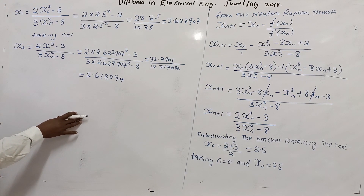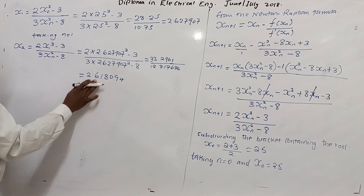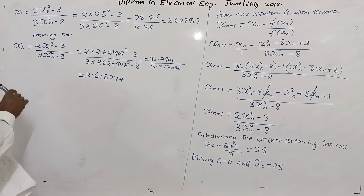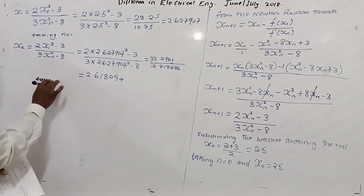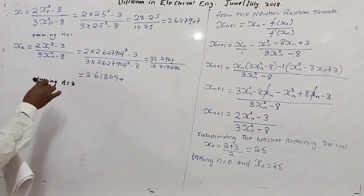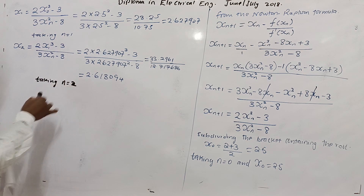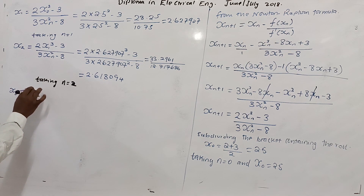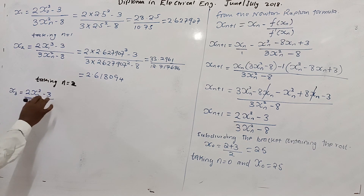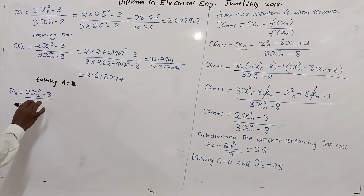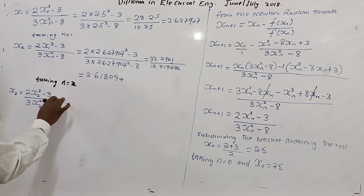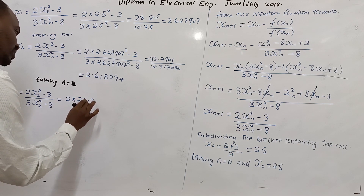We are now correct to how many decimal places? We are only correct to one decimal place — both x₁ and x₂ agree on the digit 6 in the first decimal place. Let us move on to the next iteration, x₃. Taking n = 2, x₃ = (2x₂³ - 3) / (3x₂² - 8).